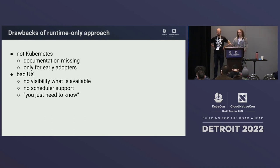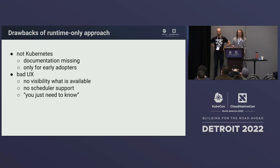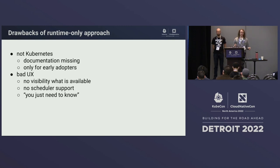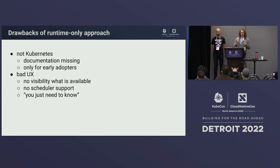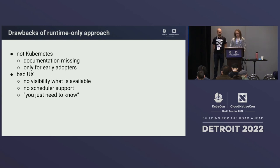This works — we can get this kind of isolation — but it's not the best user experience. For one, it's not at all integrated with Kubernetes, so there's no documentation; it's only for early adopters intimately aware with the feature. It's also a bad user experience: we're using an annotation to specify something three or four levels down the stack. There's no visibility as to what resources are available on which nodes, no scheduler support, no way to know what's available and where to put it. It's not user-friendly at all.